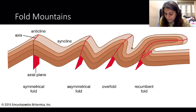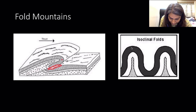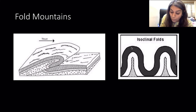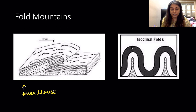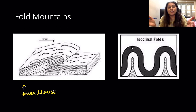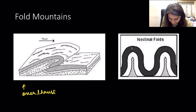Sometimes because of extreme pressure, the recumbent fold might crack and lie down completely — a fault forms in the rocks. This kind of fold with a crack is called an overthrust, which is also called a reverse fault. A normal fault happens during divergence when a rift forms on the surface, whereas a reverse fault happens because of convergence.